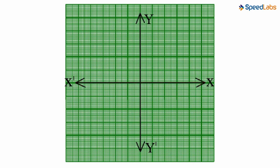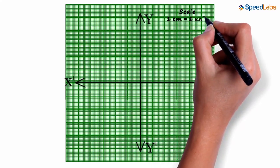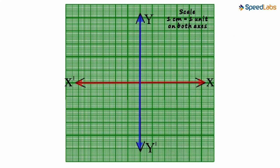Remember, whenever we draw a graph, it is important to mention the scale on the top right hand corner. Let's assume that the scale is 1 cm will equal 1 unit on both the axes.